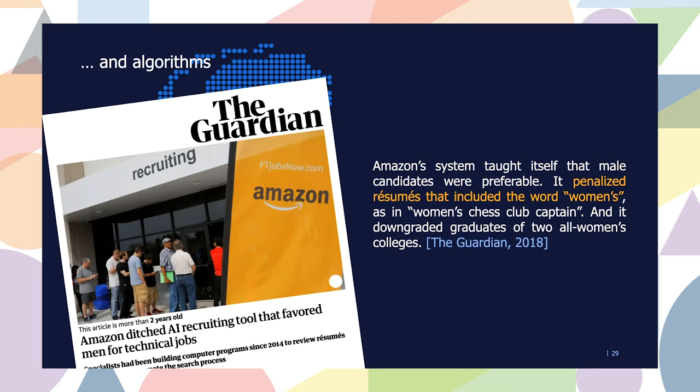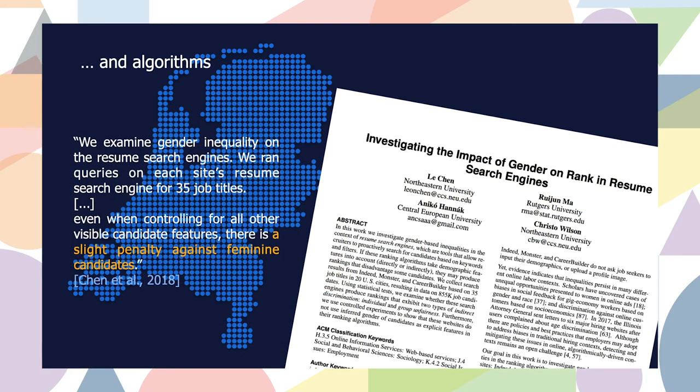However, bias exists in algorithms as well. A quite famous example is Amazon, which had an algorithm trained to filter resumes based on the employability of a candidate. Amazon themselves found that the algorithm implicitly learned to penalize resumes that included the word 'women's', because this word was more common in their negative class than in their positive class. When you don't control your feature space, your model may pick up correlations that don't reflect actual employability but capture other aspects. Another study measured bias in search engines for resumes on public websites and found a slight penalty against feminine candidates in the results.